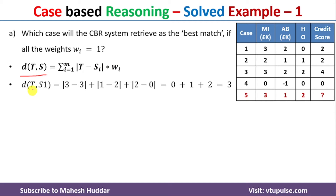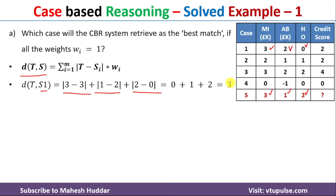We calculate d(t, s1): the distance between target and case 1. t = [3, 1, 2] and s1 = [3, 2, 0]. So: |3-3|*1 + |1-2|*1 + |2-0|*1. Since w_i = 1, the multiplication factor is 1 throughout. Solving this gives d(t, s1) = 3.